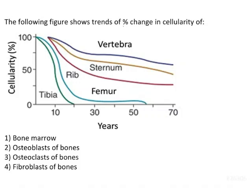The following figure shows trends of percentage change in cellularity. A graph is given showing cellularity against time in years. As per the various curves demonstrated, the cellularity gradually decreases with ageing in case of various organs such as tibia, femur, rib, sternum, and vertebra.